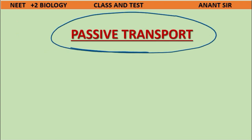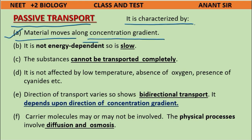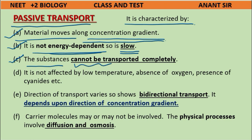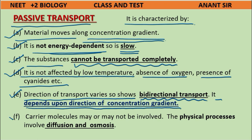Passive transport is characterized by: A) materials move along the concentration gradient; B) it is not energy-dependent, so it is slow; C) substances cannot be transported completely; D) it is not affected by low temperature, absence of oxygen, or presence of cyanides; E) direction of transport is bi-directional, depending on the concentration gradient; and F) carrier molecules may or may not be involved. The physical processes of diffusion and osmosis are examples of passive transport.